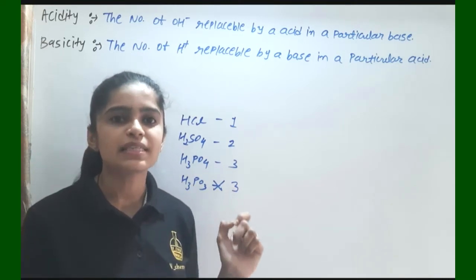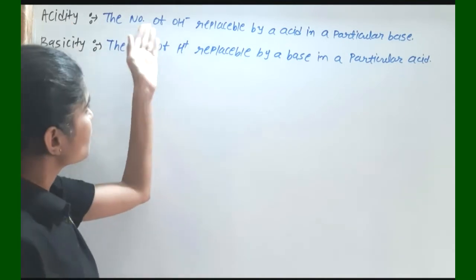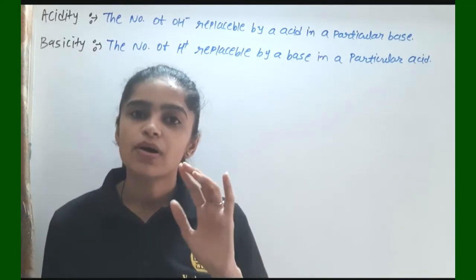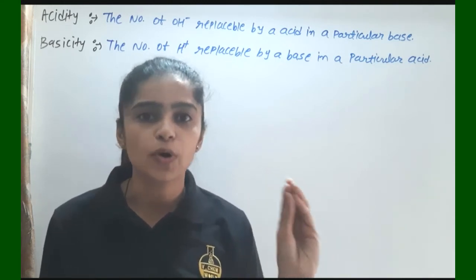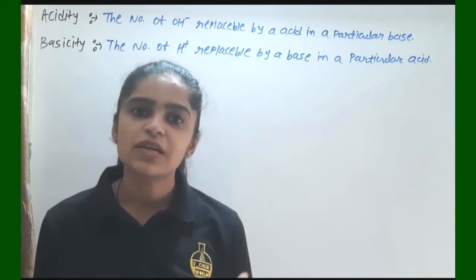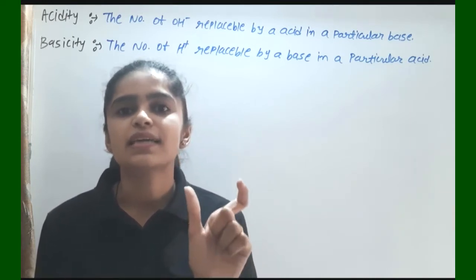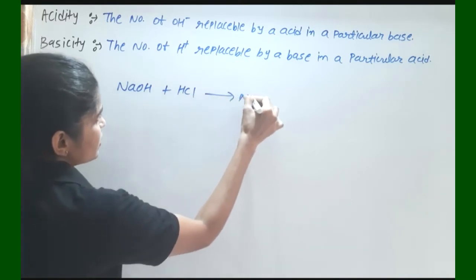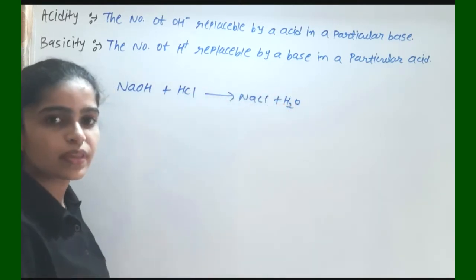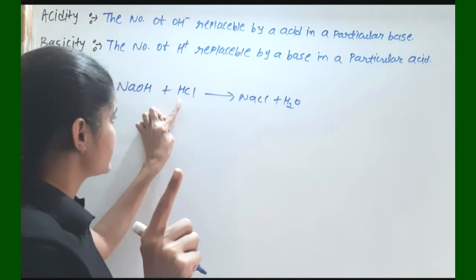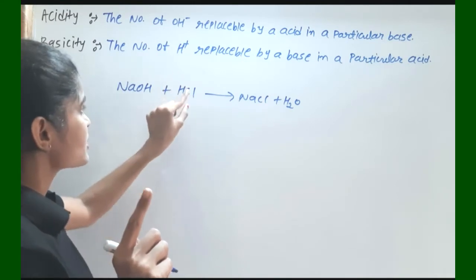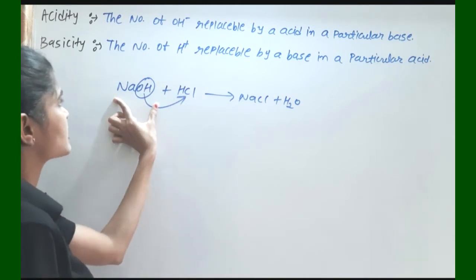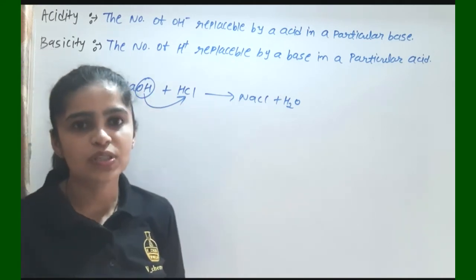Next is acidity. The number of OH⁻ replaceable by acid in a particular base. Remember that the number of H or number of OH⁻ is not simply equal to its acidity or basicity. Acidity and basicity are determined by the reaction between acid and base. So the number of OH⁻ replaceable — for example, consider NaOH and acid HCl converted into NaCl plus water. The OH⁻ is 1 and HCl has 1 H. So this OH⁻ is replaceable by this acid, and the acidity value of this base is 1.